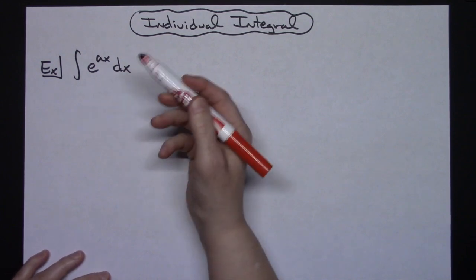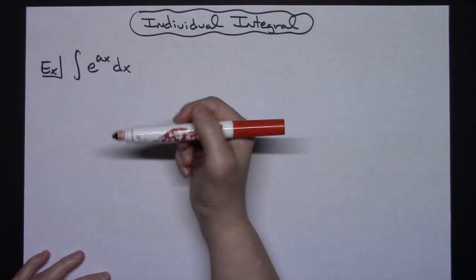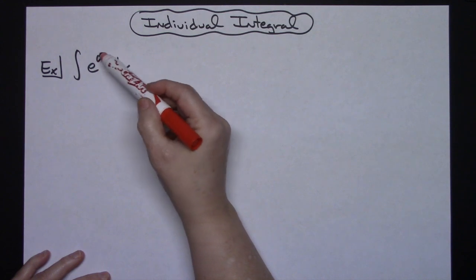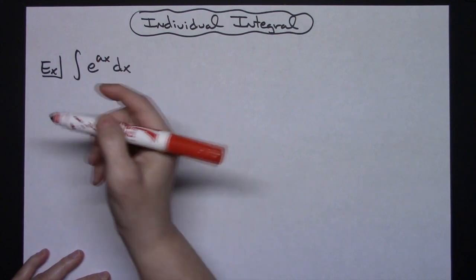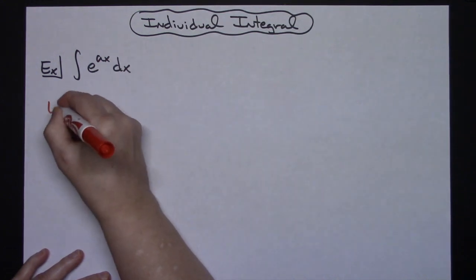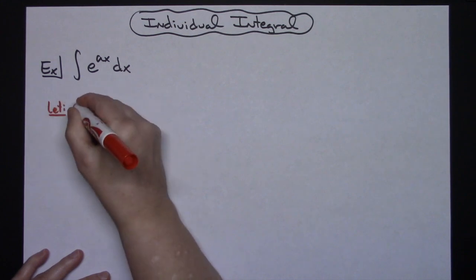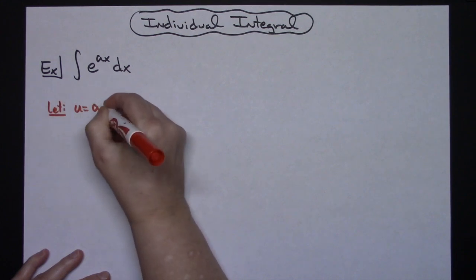So I know that I can integrate e to the u. So I'm going to start with letting u be that ax. So we're going to let u equal ax.